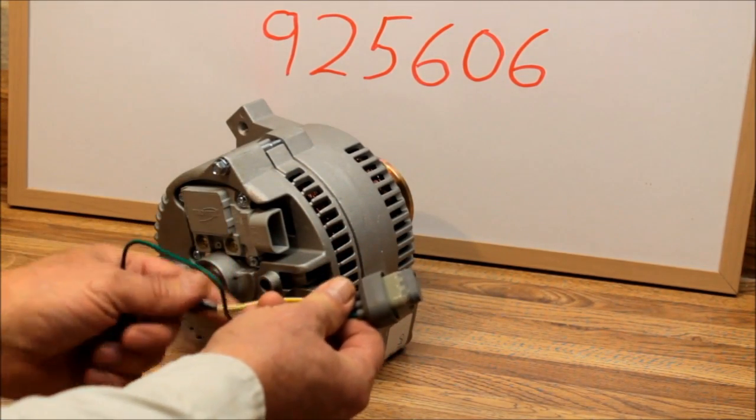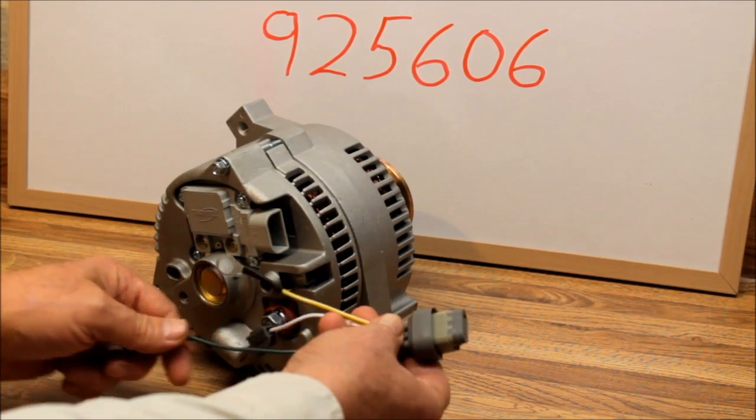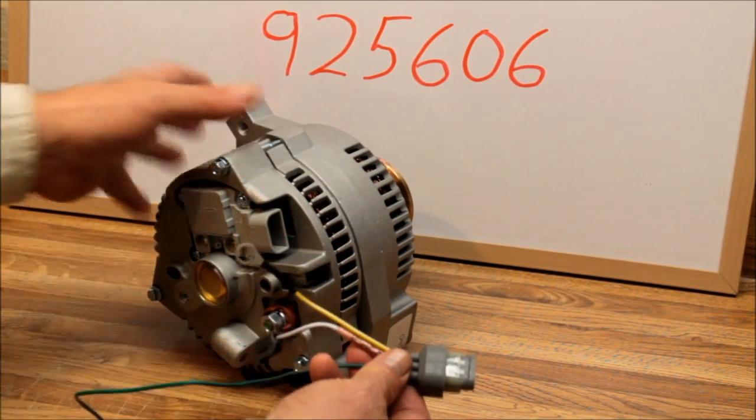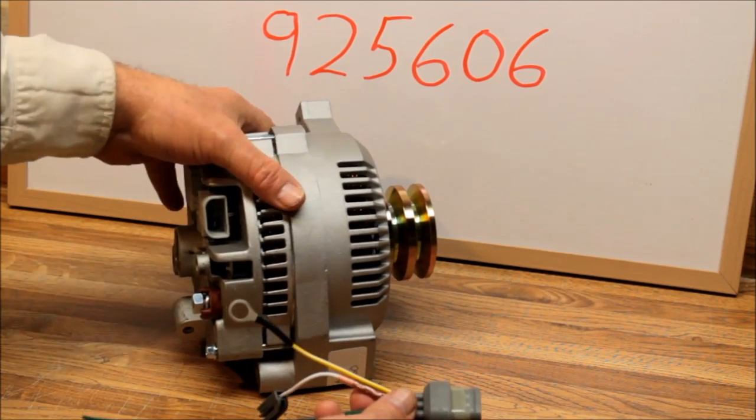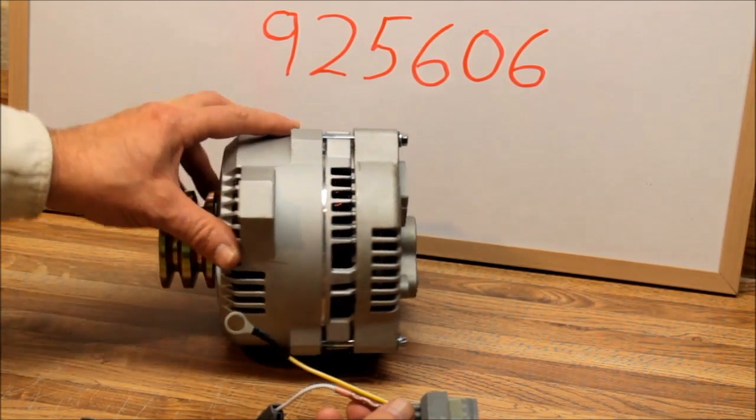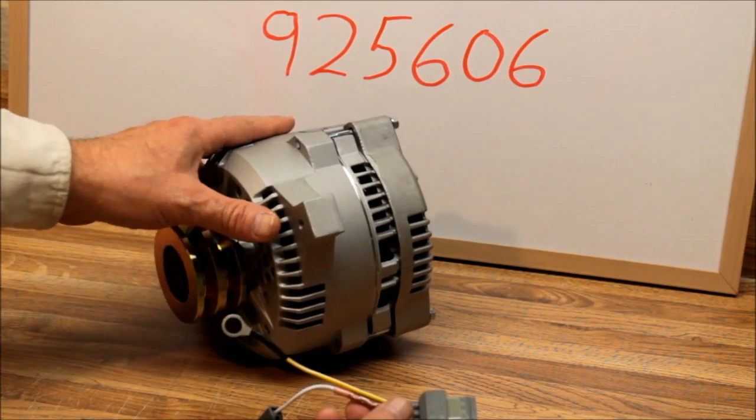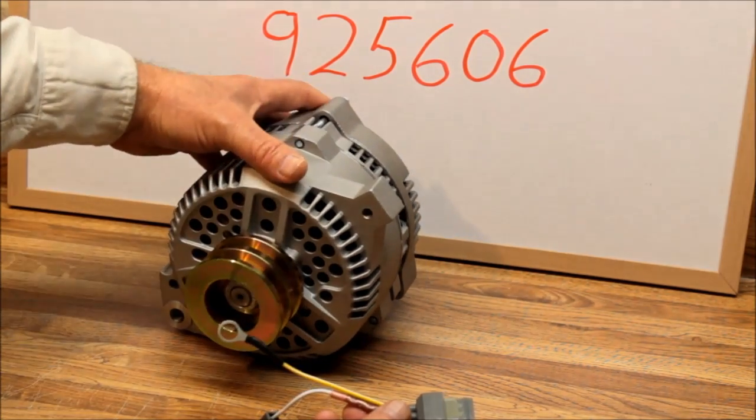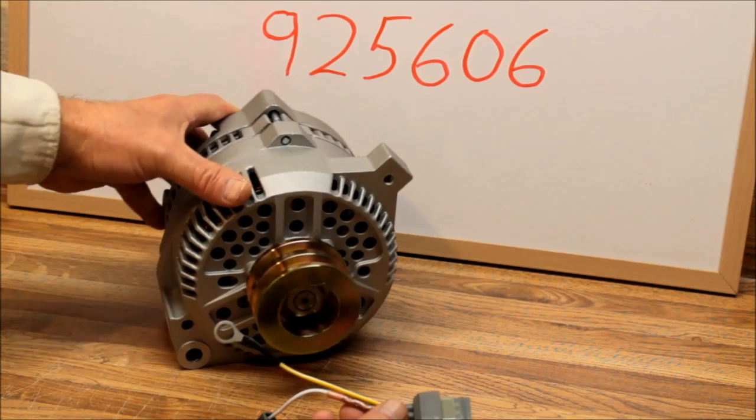Like I said, in the description below we're going to have a link - there will be a link to this combo plug plus a link to these 3G alternators. We have them in a 140 amp, a 160 amp, 200 and 250 amp in the dual rectifier, single and dual rectifier versions.